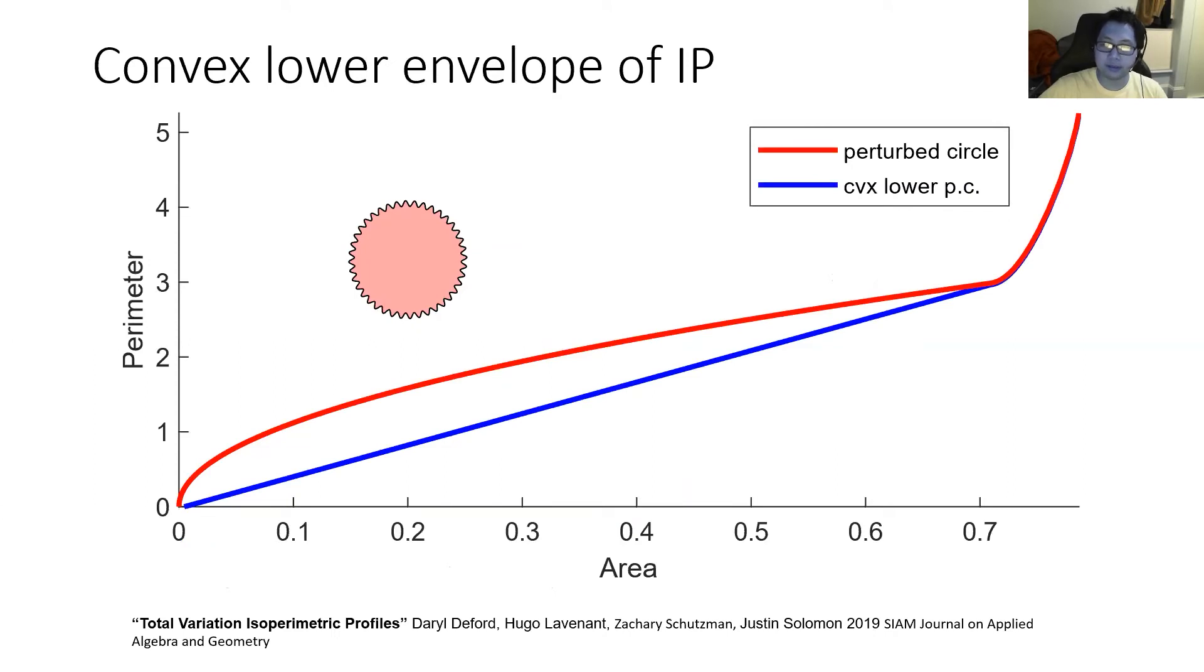In 2019, DeFord et al. proposed a total variation based algorithm that computes the lower convex envelope of the isoperimetric profile. In this example, the red curve is the profile for the red shape, and the blue curve is what can be computed using the lower bound. While this is a nice step, it doesn't allow us to compute the exact profile.